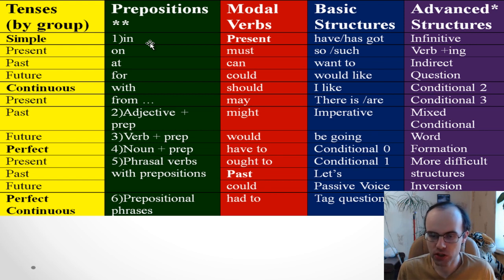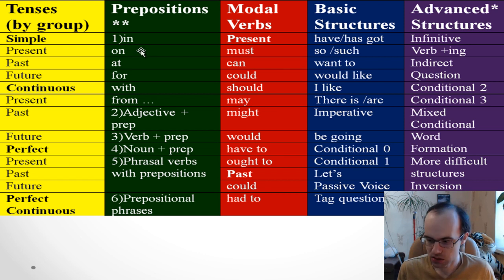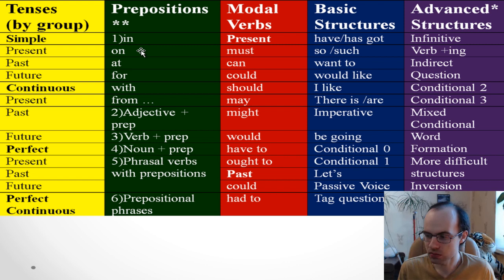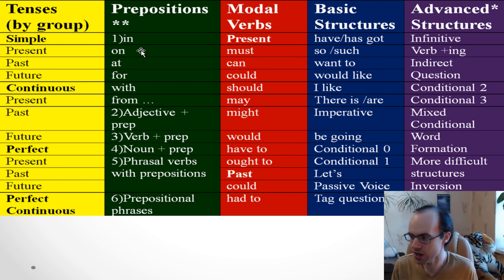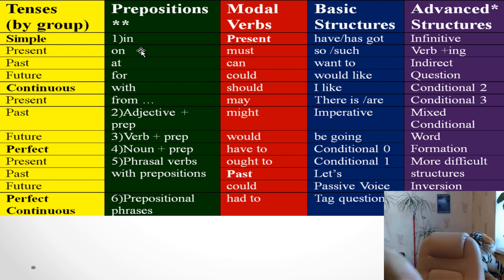'On' — as in 'It's on my desk.' On means on the surface. There are other phrases like 'on Monday' or 'on Tuesday.'